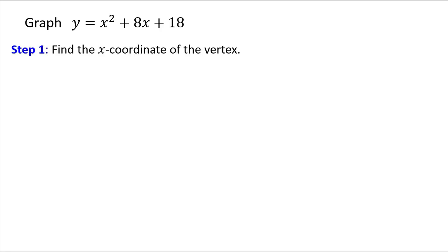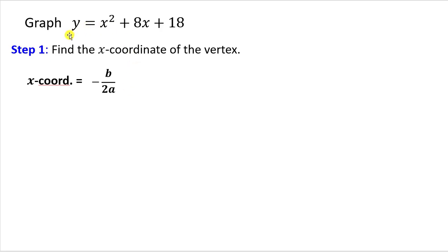We'll start with step one: finding the x-coordinate of the vertex. The formula we're going to use is x = -b / (2a), where a and b come from our function.